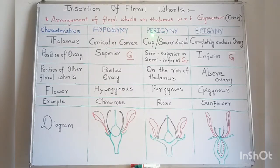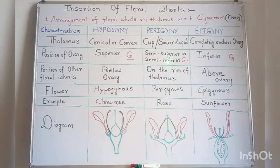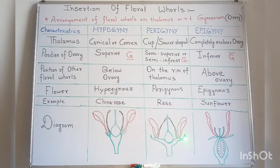Next comes perigyny. The word 'peri' means around, and 'gyny' means gynoecium, that is ovary. In this type, the thalamus is cup-shaped or saucer-shaped. The position of the ovary is either semi-superior or semi-inferior — that means the ovary is neither superior nor inferior — and it is denoted as 'G' with a small dash. The other floral whorls are arranged on the rim of the thalamus.